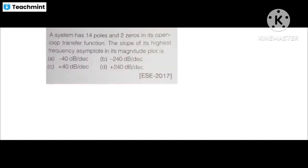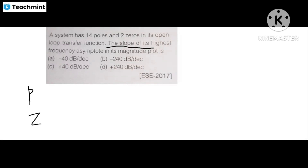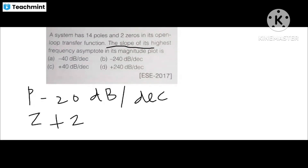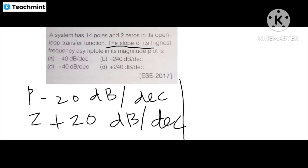The question: a system has 14 poles and 2 zeros in its open loop transfer function. The slope of its highest frequency asymptote in its magnitude plot is: minus 40 dB/decade, minus 240 dB/decade, plus 40 dB/decade, or plus 240 dB/decade. Always remember: poles have a negative slope of minus 20 dB/decade, and zeros have a positive slope of plus 20 dB/decade. So we can easily eliminate the positive answers.